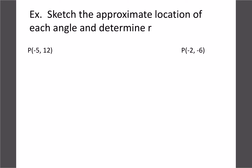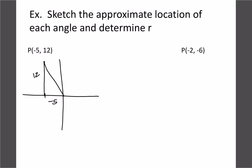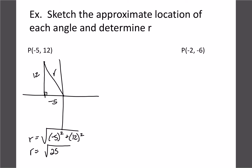Let's do a couple of practice questions. For this first one we've got negative 5, 12. Going minus 5 over and 12 up, our reference triangle uses Pythagorean theorem: r equals the square root of negative 5 squared plus 12 squared. Make sure you put it in brackets on your calculator — without brackets you'll get negative 25 instead of positive 25. So we get root of 25 plus 144, which is root 169, which simplifies to 13.